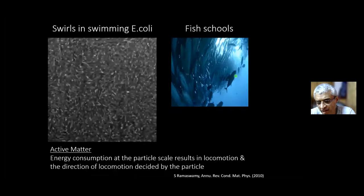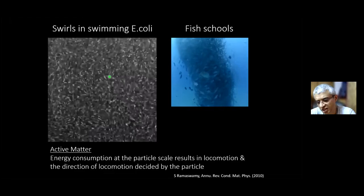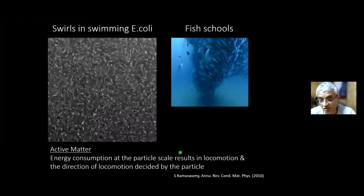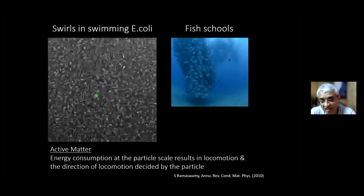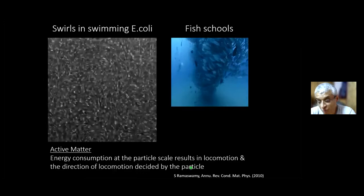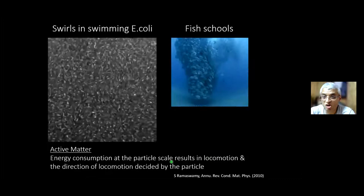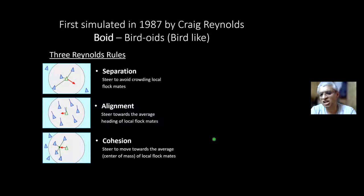By active matter, I mean entities or agents that consume energy at the level of an individual particle, resulting in locomotion. Importantly, all the patterns that emerge are not because of any central command — they form spontaneously. These are self-propelled particles whose direction of locomotion is set by the individual, not by a central command. To model such systems, it requires just three rules, laid out by Craig Reynolds in a 1987 computer simulation.